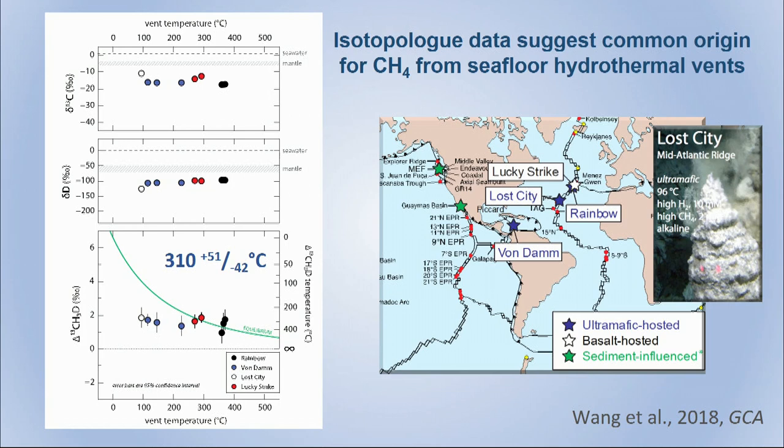What is exciting about this dataset is that isotopically, the methane is very homogeneous. No matter where it came from, we see the same sort of carbon isotopes, the same deuterium isotopes, and the same clumpiness — from which we infer a formation temperature of about 310 degrees centigrade, plus or minus 50. Wherever the methane came from, whatever the vent fluid temperature, the methane appears to have come from a common source.